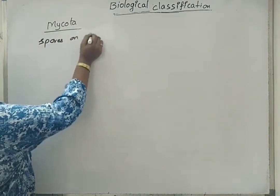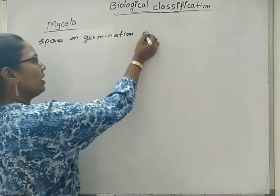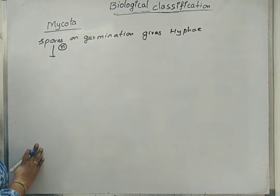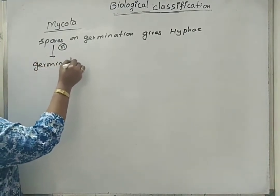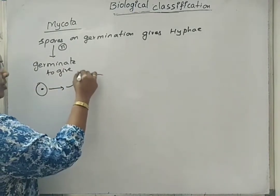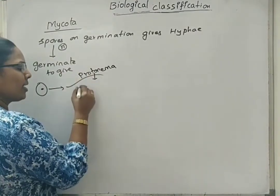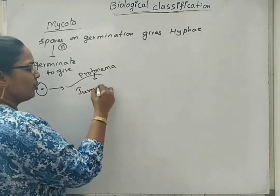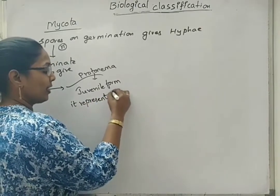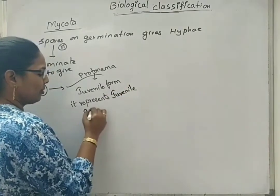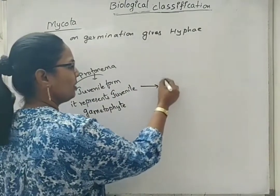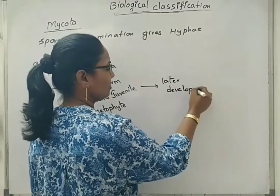Spores on germination give hyphae, but this is not direct — there are some stages. Spores are haploid structures. They germinate to give a thread-like structure called protonema. This protonema is considered as a juvenile form, meaning newly formed. It represents the newly formed gametophyte, or juvenile gametophyte. So here we are seeing the formation of protonema. This protonema later develops into hyphae.